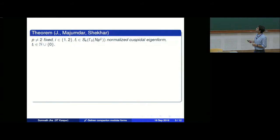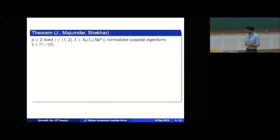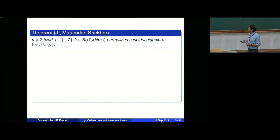This is joint work with Sudhanshu Shekhar, who is here, and also with Dipramit Majumdar, who is at IIT Madras. Let p be an odd prime — one restriction is that due to various technicalities we could not handle the p equal to 2 case, so that is excluded. Let f_1, f_2 be two normalized cuspidal eigenforms, and T_i are non-negative integers.